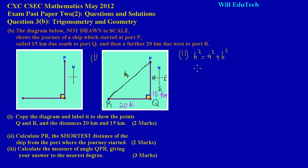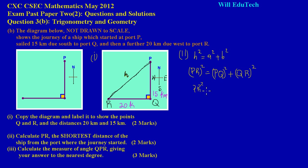The hypotenuse is PR — that's what we're trying to find. Substituting values: PR² = PQ² + QR². PQ is 15 km and QR is 20 km, so PR² = 15² + 20². We know that 15² = 225 and 20² = 400, so PR² = 225 + 400 = 625.